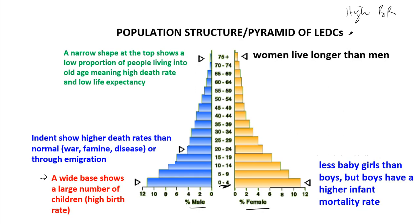Between the ages of 0 to 4, the number of males is higher than the number of females — fewer baby girls than boys — but boys have a higher infant mortality rate than girls. Moving up to the economically active, between 15 to 64 years, if there is an indent, it means there is a higher death rate than normal, which can result from war, famine, disease, or emigration.